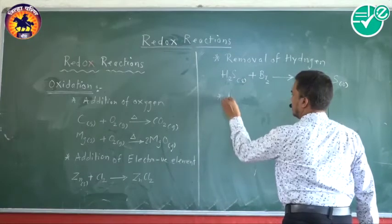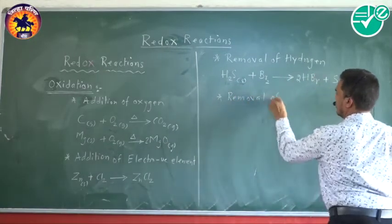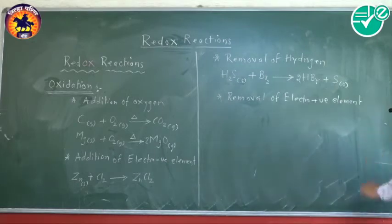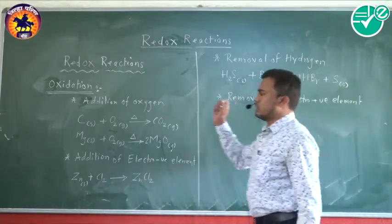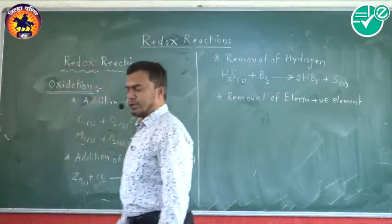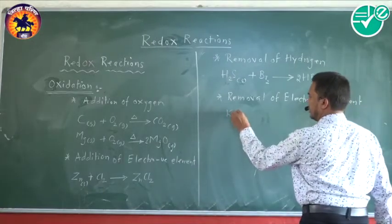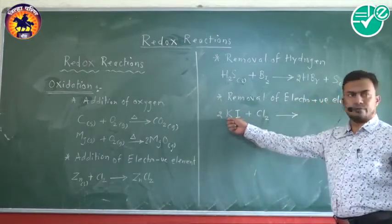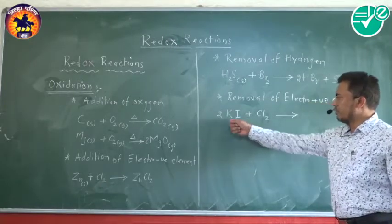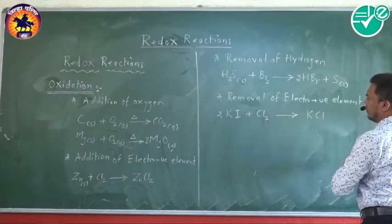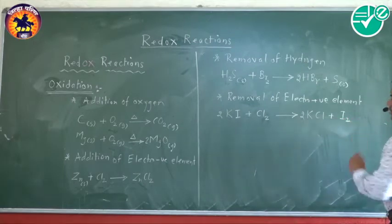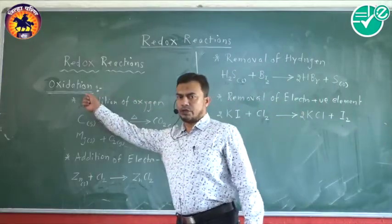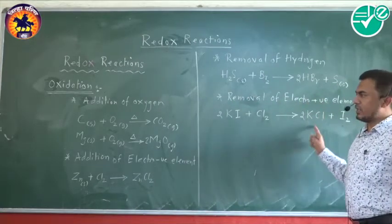Another classical definition is removal of an electropositive element — that is also called oxidation. For example, potassium iodide treated with chlorine: potassium is electropositive, so removing the potassium from potassium iodide gives the formation of potassium chloride and iodine. In this case, the removal of the electropositive element is also called an oxidation reaction. These are the classical definitions of oxidation.